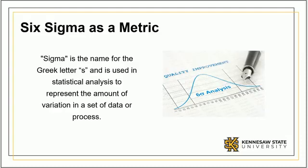Six Sigma as a metric. Six Sigma is a name for the Greek letter S, and is used in statistical analysis to represent the amount of variation in a set of data or process. Although variation is always present in any process, excessive variation results in decreased product performance and reliability, as well as unacceptable defect levels.